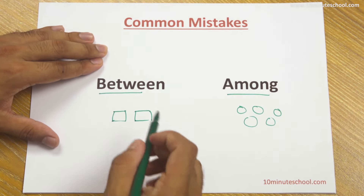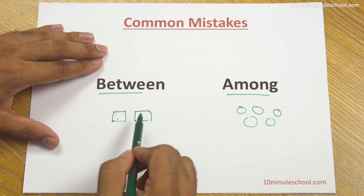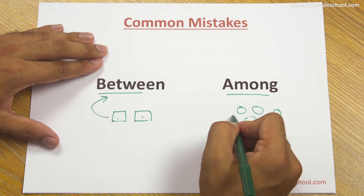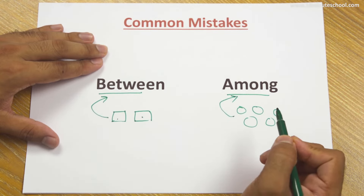Always remember: when we compare two things, we use 'between'. When we compare them within a group, we use 'among'.